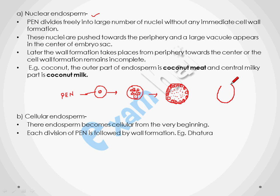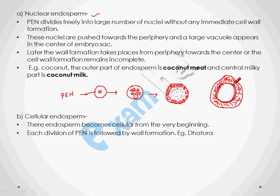If you have observed the coconut — this is the coconut with its outermost wall — the area called coconut meat has nuclei arranged towards the periphery, and inside you have seen the milky liquid part called coconut milk, which is liquid containing free nuclei.